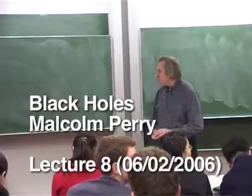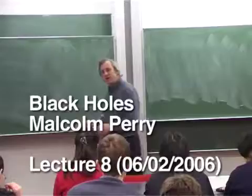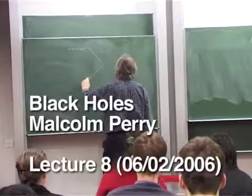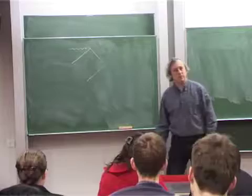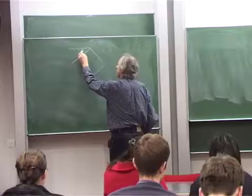We were looking at particle motion in the Schwarzschild metric, or at least part of the Schwarzschild metric which describes black holes, so we were in this region and this region, with the possibility of something going in, and we were looking at things that looked like that.